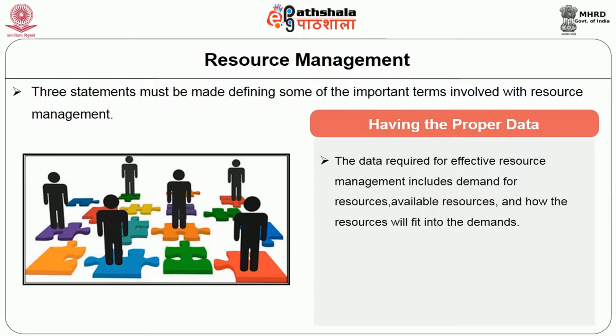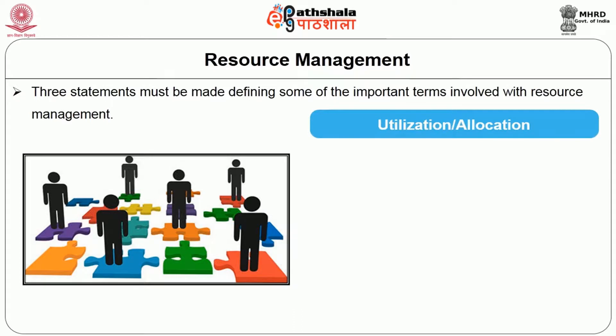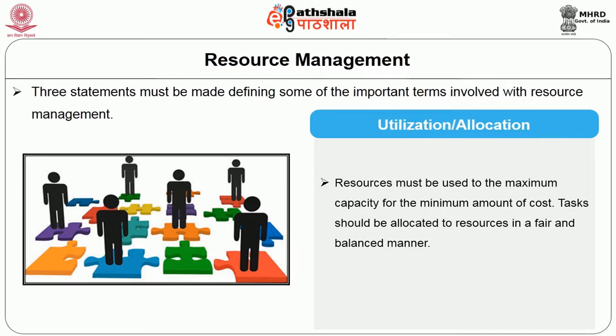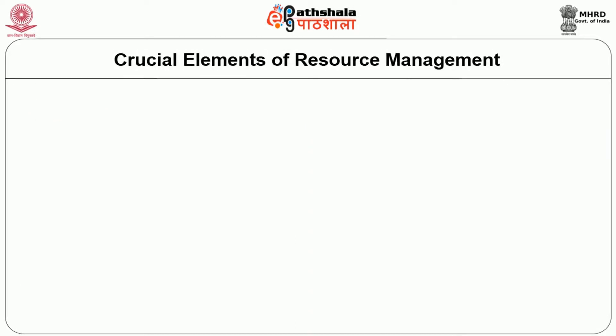The second key element is having the proper data. The data required for effective resource management includes demand for resources, availability of resources, and how the resources will fit into the demands. Next is the utilization and allocation of resources. Resources must be used to the maximum capacity for the minimum amount of cost. Tasks should be allocated to resources in a fair and balanced manner.